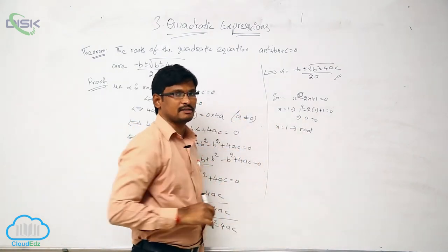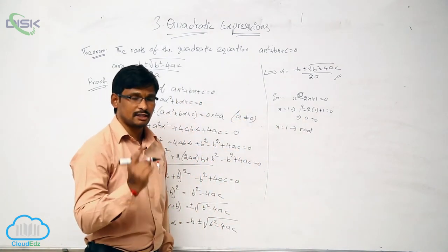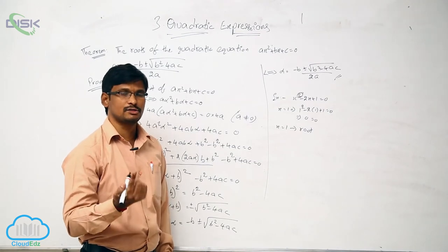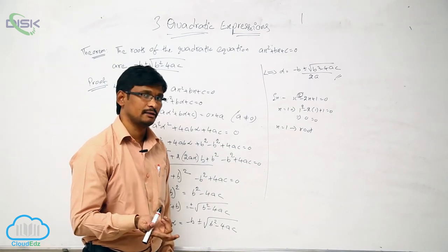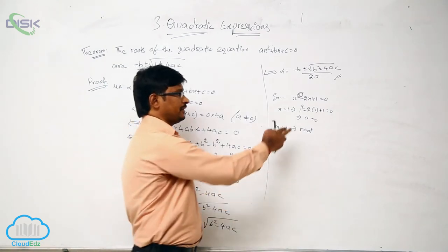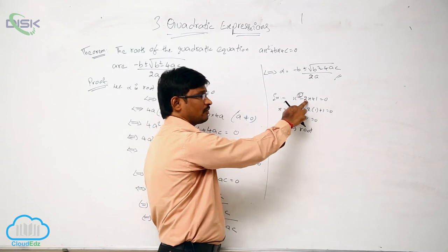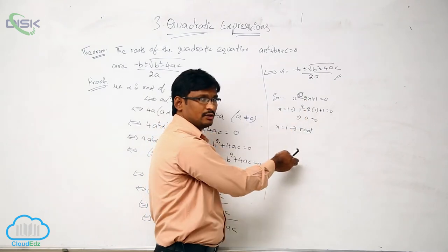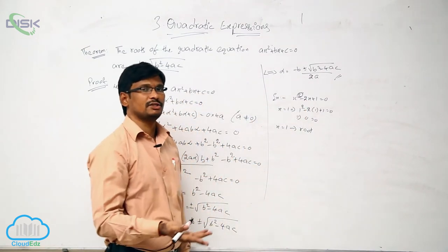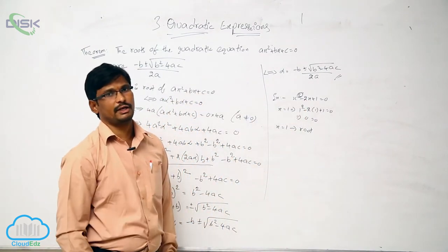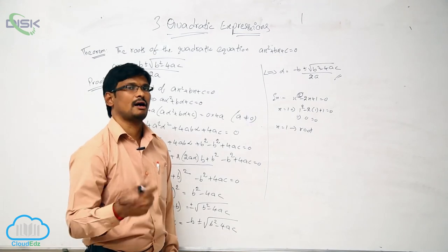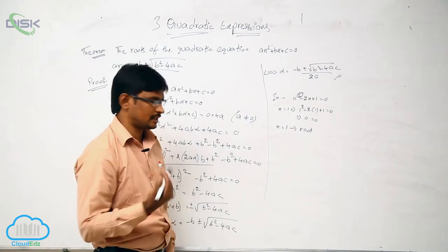Only x = 1 satisfies it, so the roots are 1 and 1 — both are equal. If we know the quadratic equation, we can do the simplification. But without simplification, how do we verify whether the roots are equal, distinct, or imaginary? For this, we have the discriminant.